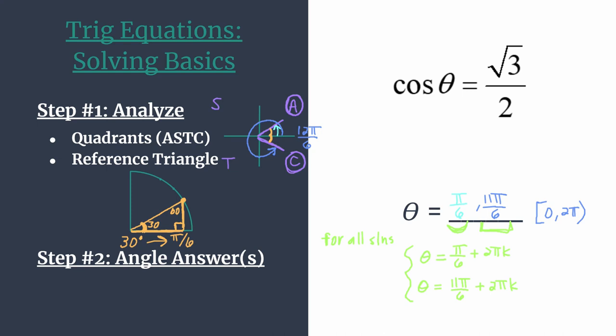That's how we solve the basic trig equation cosine theta equals positive square root 3 over 2. Be sure to check the video description if you want links to more worked-out examples. Thanks so much for watching.